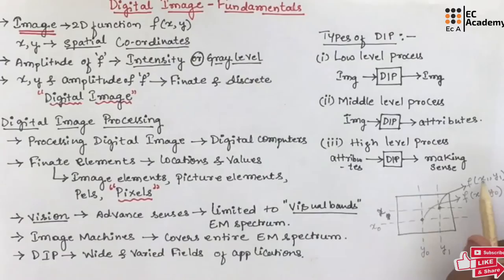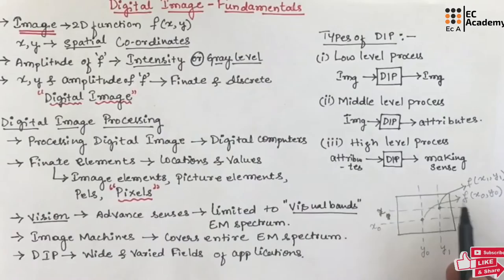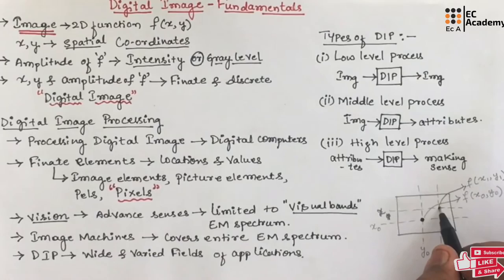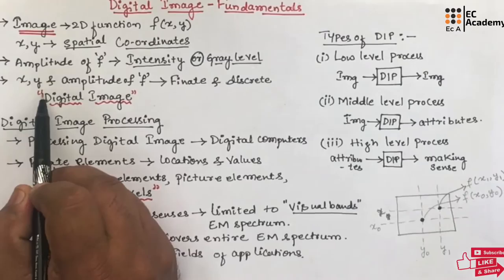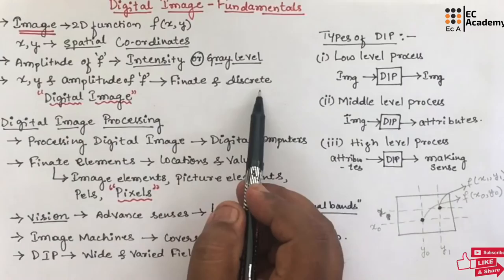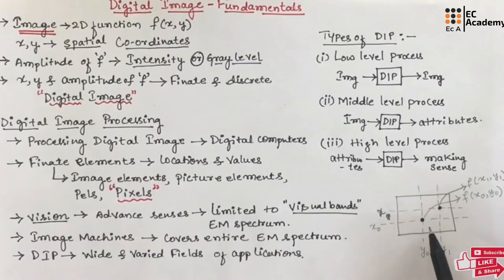The amplitude of f at any pair of x, y is known as intensity or gray level. The value at each point identifies the intensity or gray level of an image at that particular point. At different points, we will have different intensities and gray levels. When the values of x, y and the amplitude of f are all finite and discrete values, we call an image a digital image.